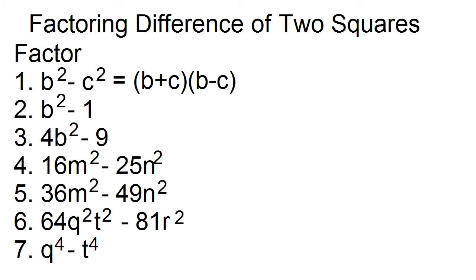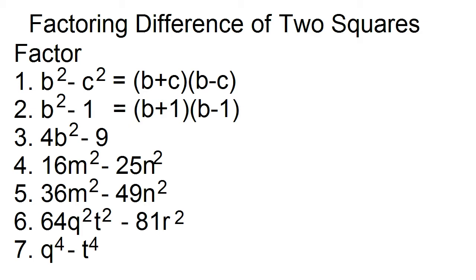Number two: factor b squared minus one. This is difference of two squares because this can be written as b squared minus one squared. The factors are b plus one and b minus one.